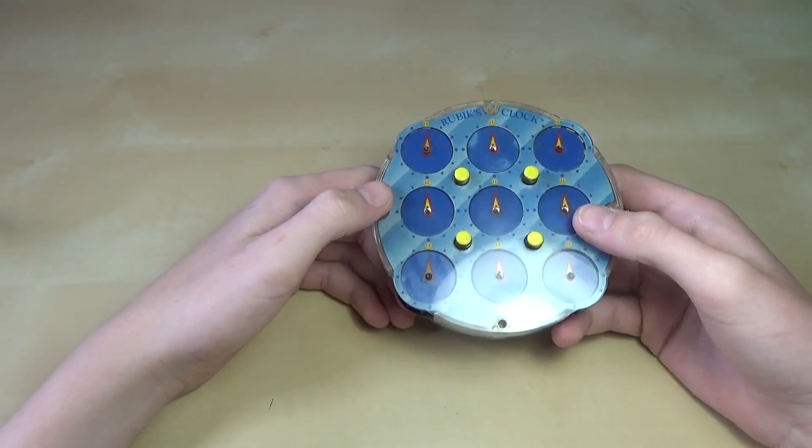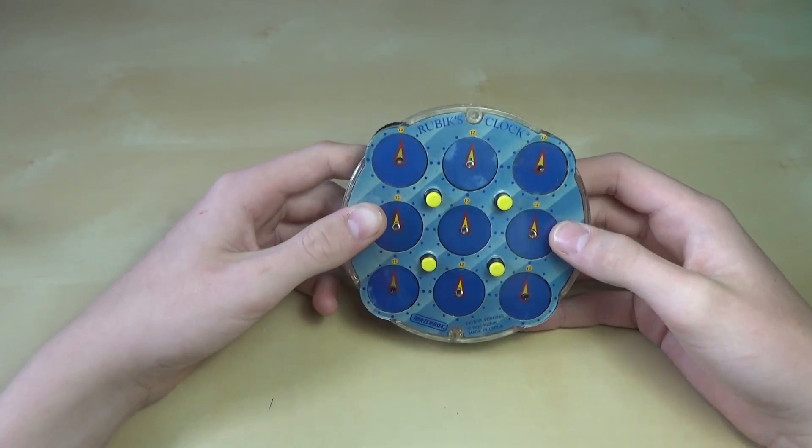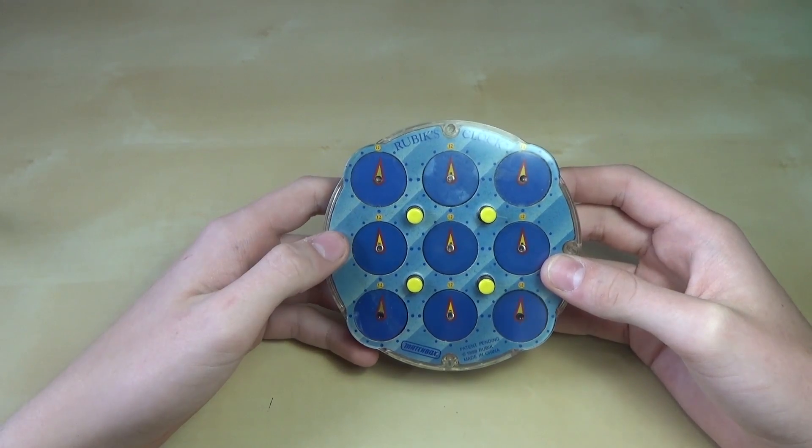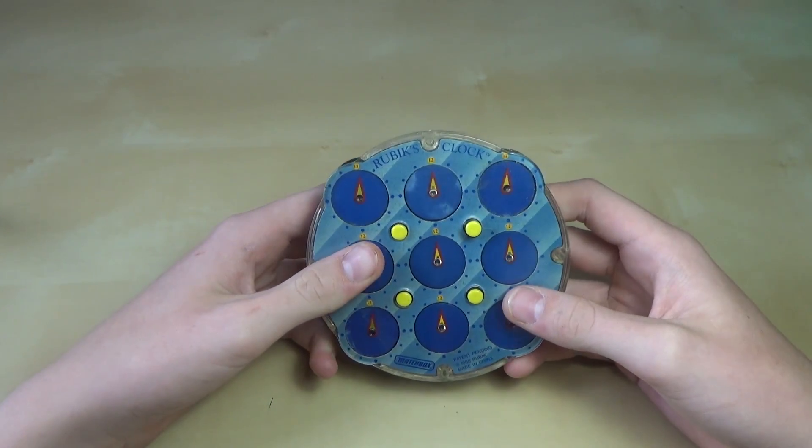So the clock is a pretty interesting puzzle. It's unlike most of the twisty puzzles, but it's also pretty easy to solve, so I'm going to show you how to solve it today. But before we get started with that, I'm just going to explain what each of the pins do to all the different faces of the clocks and everything.